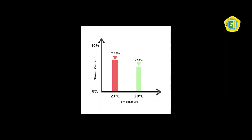The results showed that ethanol levels in fruit waste at a temperature of 27 degrees Celsius is 7.12%, and at a temperature of 30 degrees Celsius is 5.34%. This showed that fermentation at 27 degrees Celsius is more efficient than at 30 degrees Celsius.